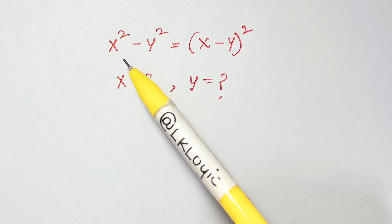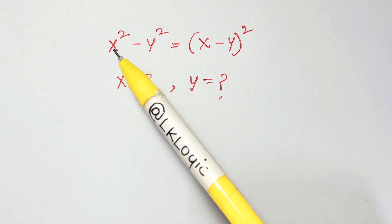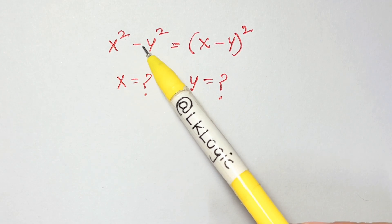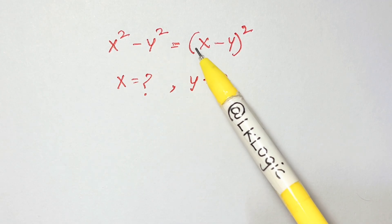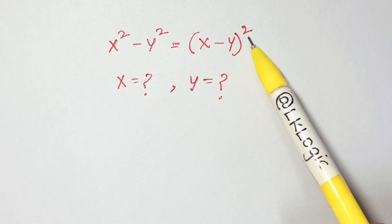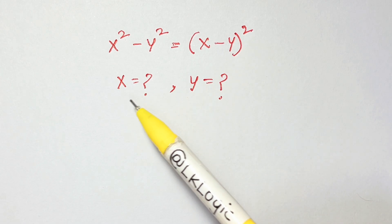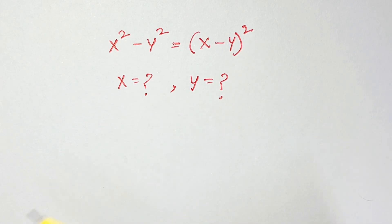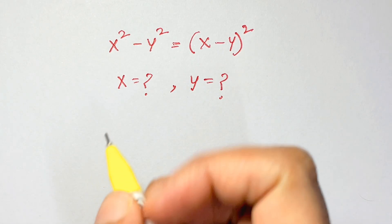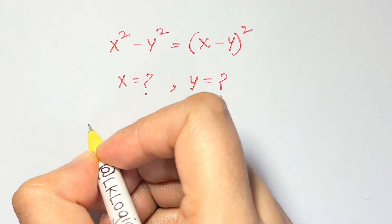Hi everyone, we have a nice algebraic equation here: x² minus y² equals (x minus y) the whole square, and we have to find the values of x and y. So let's start with that.